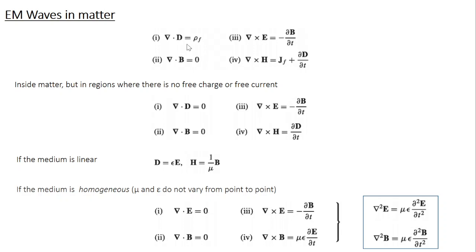Now if you talk about materials where free charges and free currents are absent, for example, a dielectric material which is of particular interest in the case of optics. So in this case, rho F and JF becomes 0.